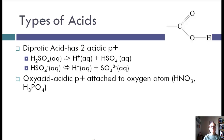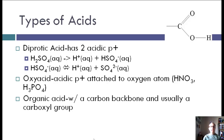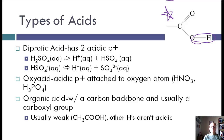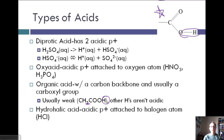An oxyacid is one where the acidic proton is attached to an oxygen atom — examples include HNO3 or H3PO4. An organic acid has a carbon backbone and usually a carboxyl group (C double-bonded to O, plus an OH). For example, CH3COOH has three non-acidic hydrogens and one acidic hydrogen. Organic acids are usually weak acids.